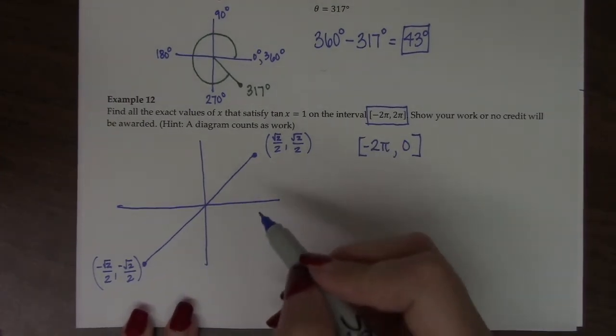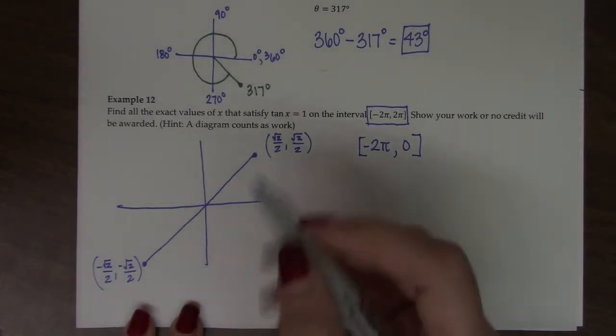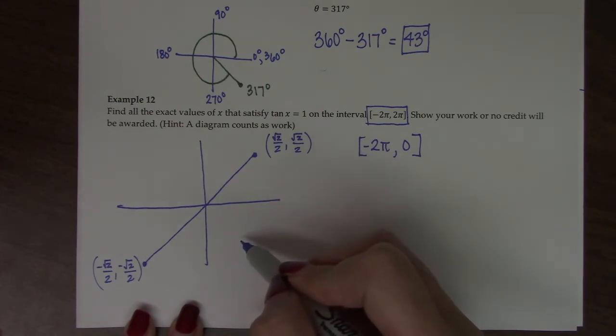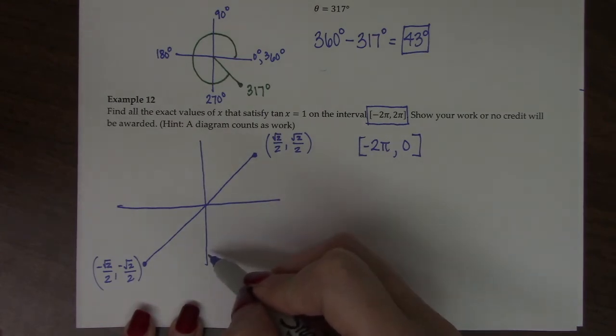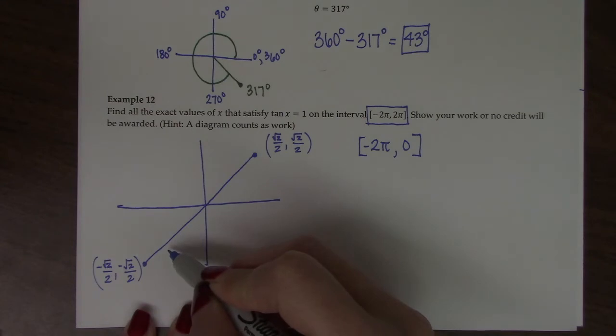So if I'm using my counting trick, since these are the 45 degree measures, this would be negative π over 4, negative 2π over 4, negative 3π over 4.